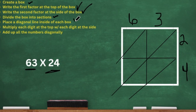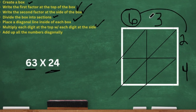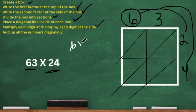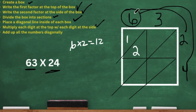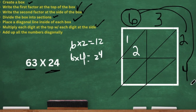So we are going to multiply each digit at the top with each digit at the side. Our first digit at the top is the six. I'm going to take that six and multiply it by the two, and then also multiply it by the four. So we have six times two, and six times two is 12. 12 is a two-digit number, so I'm going to fill those in just like that. Then six times four — six times four is 24. That is also a two-digit number, so I'm going to put that at the bottom right there.